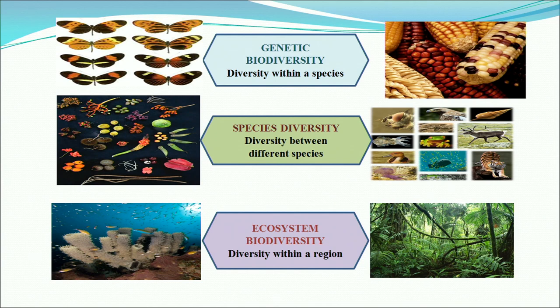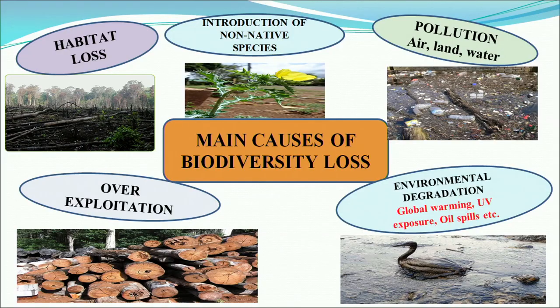A pictorial depiction compares the three levels of biological variation. Genetic diversity is shown through different varieties of butterflies within a species, and various forms of maize cobs available. Species diversity shows the wide diverse species in both plant and animal life. Ecosystem diversity shows the ocean with corals on one side and diverse forest land with many forms of living organisms on the other.